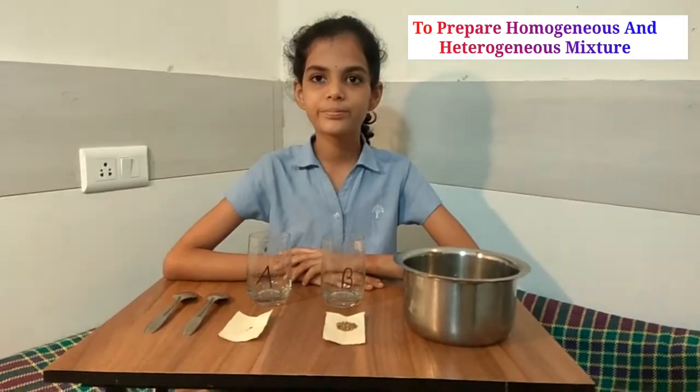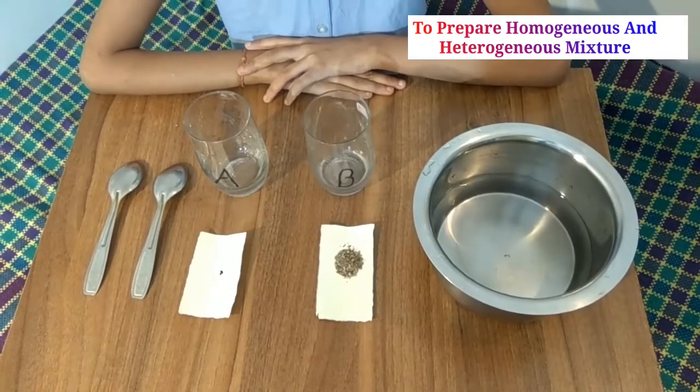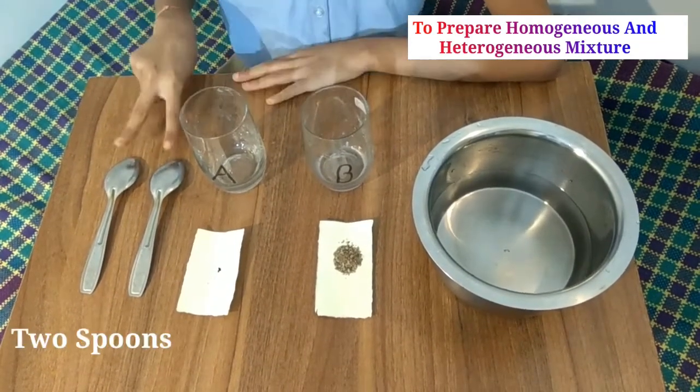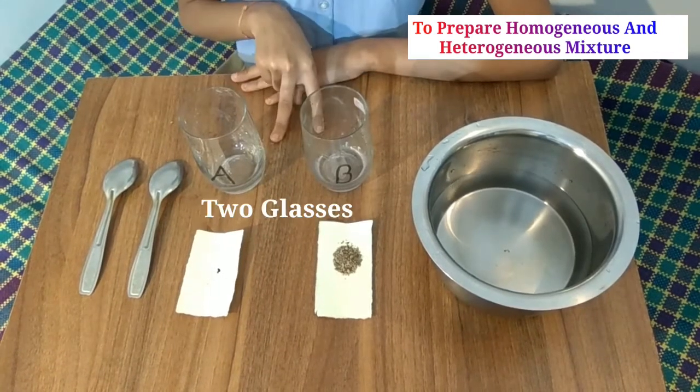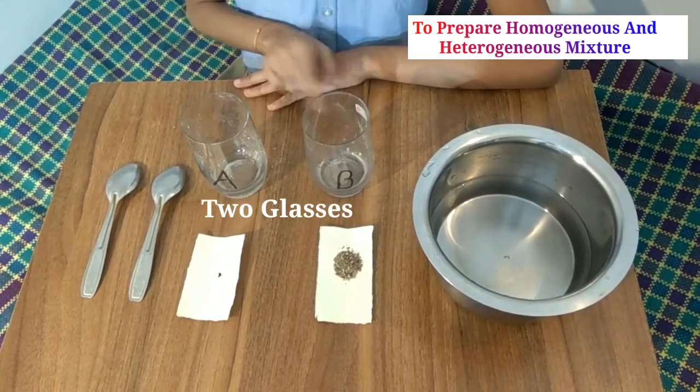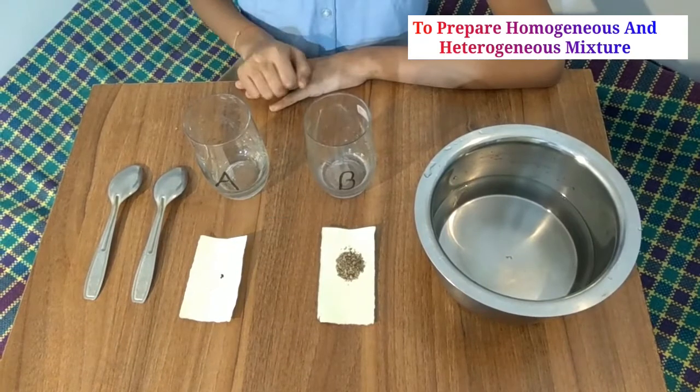Materials we need: two spoons, two glasses. Name the two glasses by A and B, potassium permanganate, sand, and water.